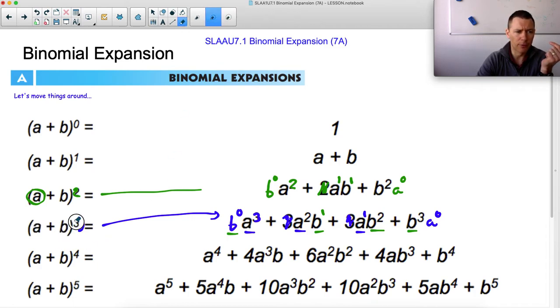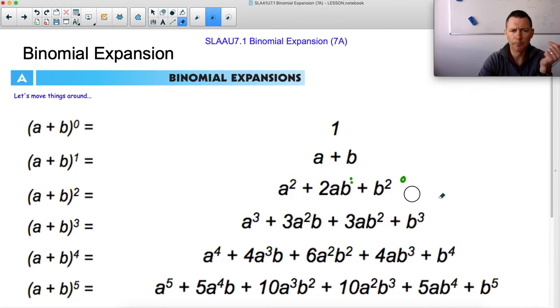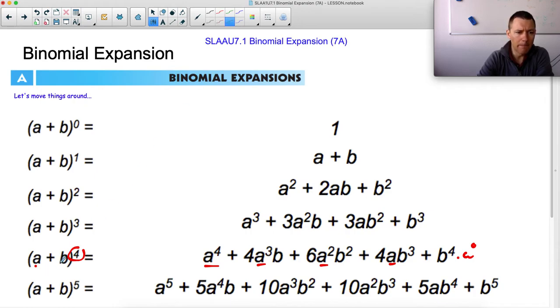Try the fourth one and maybe pause me and work through and make sure the fourth one makes sense to you like that. So with the a plus b to the fourth, we could expand it fairly easily and say, oh, a is going to start with this maximum value of four and go a to the four, a to the three, a to the two, a to the one, a to the none. And b is going to start with b to the none and then work its way up. b to the first, b to the second, b to the third, b to the fourth.